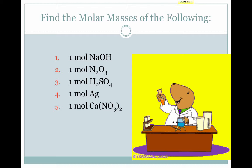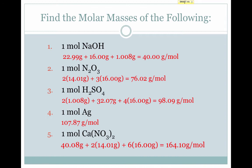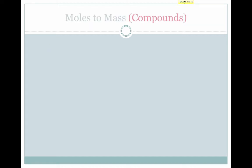Pause the video here and try finding the molar masses of some or all of these compounds. Be particularly careful on number 5 — you'll see that this 2 indicates we have 2 of that entire NO3 group. Welcome back. Here's what you should have gotten. Now that we know how to find the molar mass of a compound, we can perform conversions just like we did with elements.